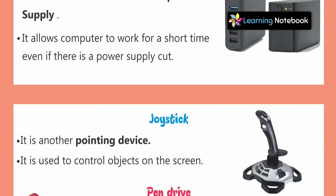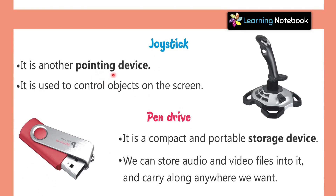Next is the joystick. It is another pointing device. We are calling it another pointing device because the first pointing device of the computer is the mouse. Like the mouse, the joystick also points the cursor on the screen. Look here — this is a joystick, and it is used to control objects on the screen.